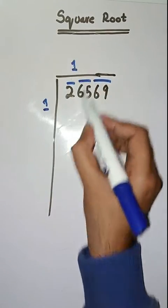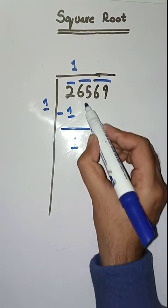So we take a number 1. 1 times 1 is 1. Minus karenge, humali pas 1 aa jega. Next pair is 65.